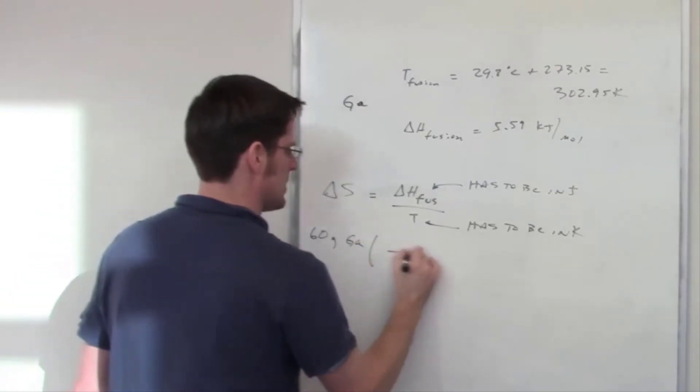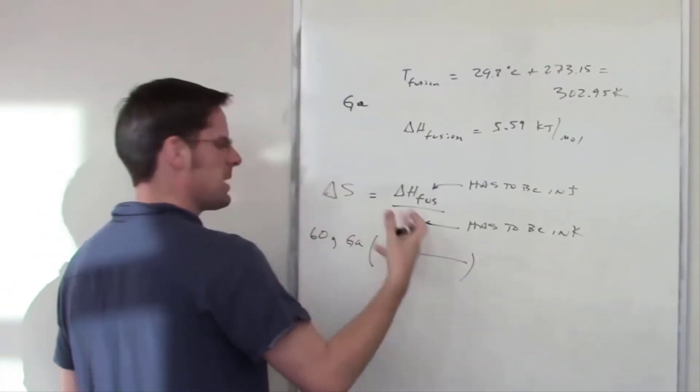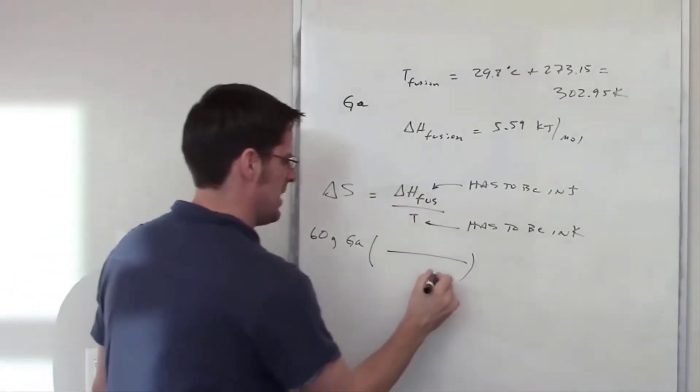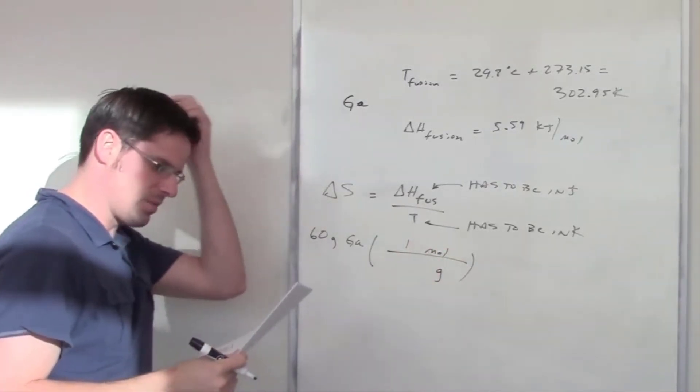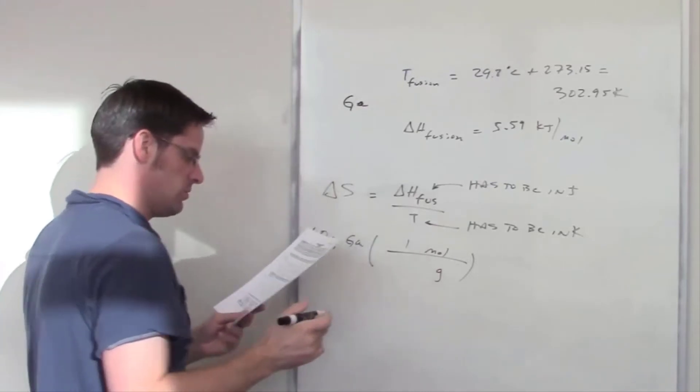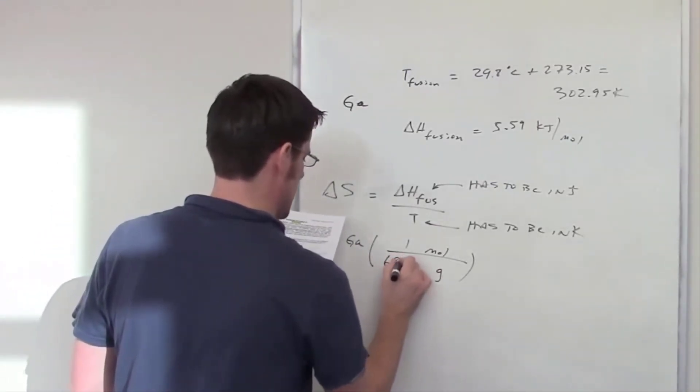So let's take our 60 grams and then we'll remember that there's some kind of atomic weight of gallium. I've got grams down here and moles up here. One mole of gallium weighs a certain amount. We can find that on the periodic table. Fortunately I already did, at 69.7.